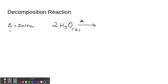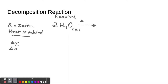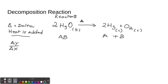Delta is the Greek letter meaning heat is added in chemistry — in math it means 'change of,' like change in y over change in x to find slope. So the reactant is one compound (A+B), and it gives us mercury (liquid) plus oxygen (gas). You'll see notations like (s), (l), and (g) for solid, liquid, and gas. There's also (aq) for aqueous — meaning dissolved in water.